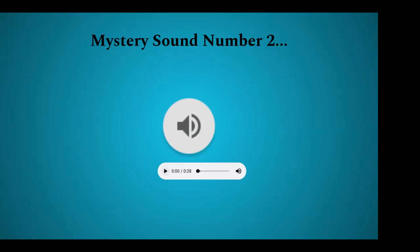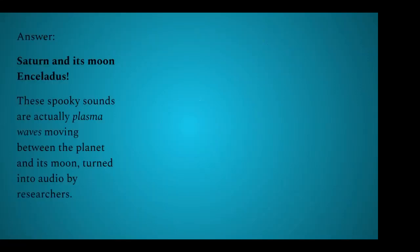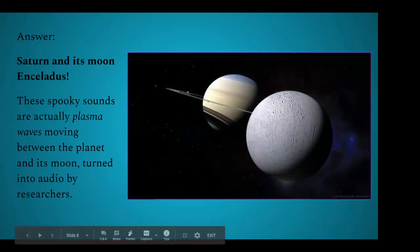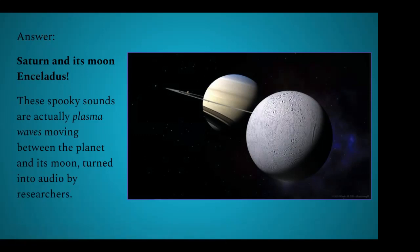And here's our second mystery sound. What a strange noise. This strange sound is created by Saturn and its moon Enceladus. These spooky sounds are actually plasma waves moving between the planet and its moon, turned into audio by researchers. It's almost like they're talking to each other. The plasma waves are coming off of one planet surface and moving to the moon and back and forth.